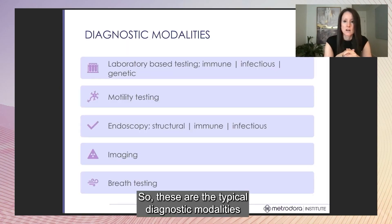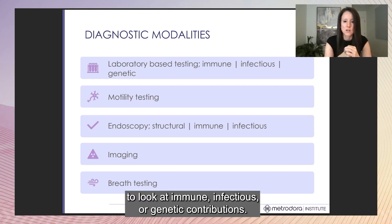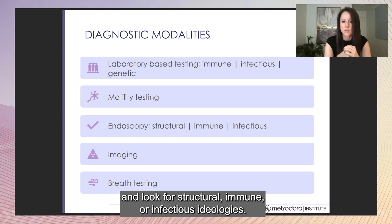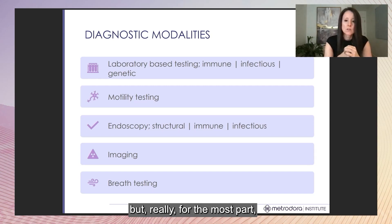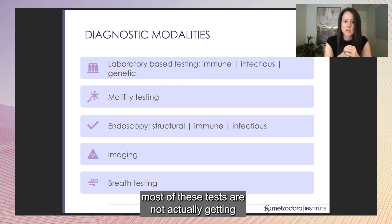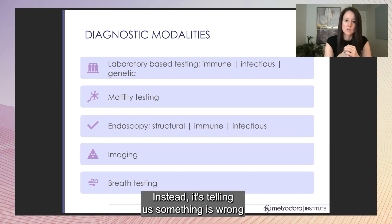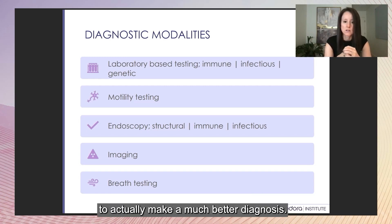These are typical diagnostic modalities available for most physicians, including your gastroenterologist: laboratory-based testing to look at immune, infectious, or genetic contributions; motility testing; endoscopy to look for structural, immune, or infectious etiologies; imaging; and breath testing. But most of these tests are not actually getting at the pathobiological mechanism driving the disorder — they tell us something is wrong. We can combine this with other testing modalities to actually make a much better diagnosis.